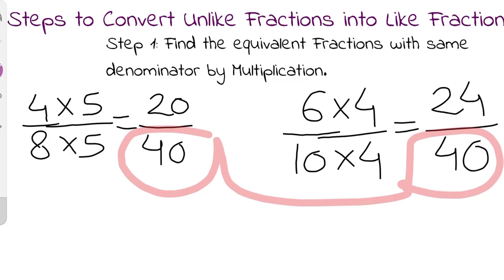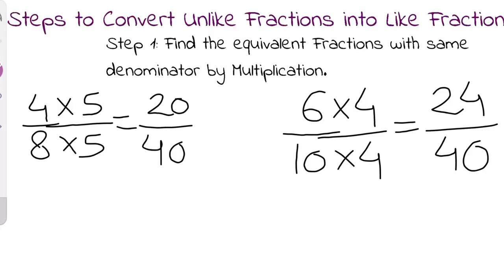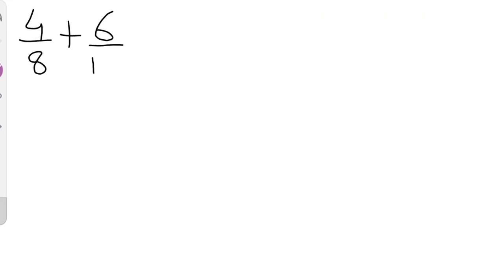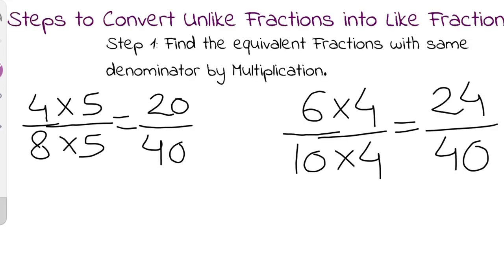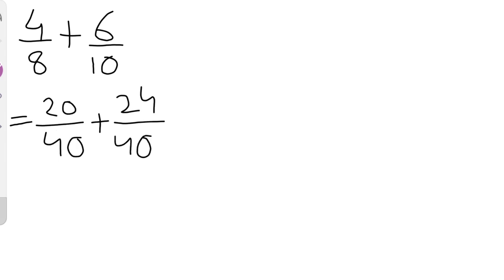Let's solve an addition example using the same fractions: 4/8 plus 6/10. The equivalent fractions were 20/40 and 24/40. So we have 20/40 plus 24/40. We add the numerators and the denominator remains the same: 20 plus 24 equals 44, giving us 44/40 as our final answer.